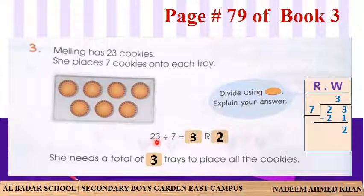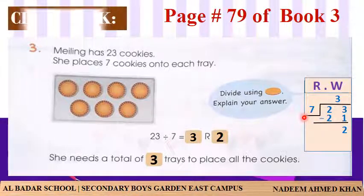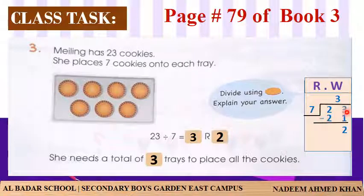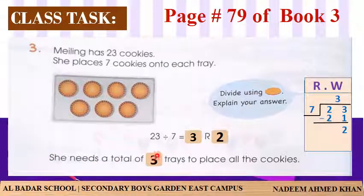rough column میں 7 باہر اور 23 اندر لکھا۔ 7 کے table میں 23 نہیں آتا، 3 times پڑھیں تو 7×3=21 آتا ہے۔ 21 نیچے لکھیں، پھر 23 minus 21 = 2 باقی بچا۔ quotient 3 ہے اور remainder 2۔ Total 3 trays کی ضرورت ہے — یہ ہمارا answer ہے۔